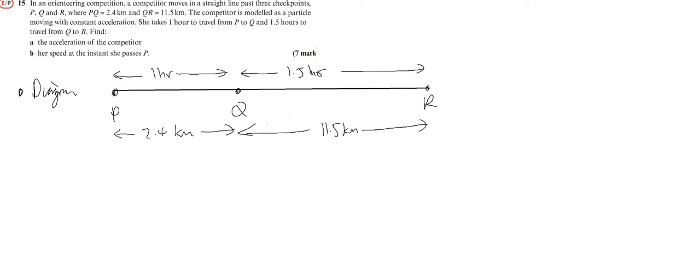We're going to try and find acceleration. What do we know? Well we know the distance from P to Q, that's 2.4. We don't know initial velocity, we don't know the final velocity, but we know that time is one.